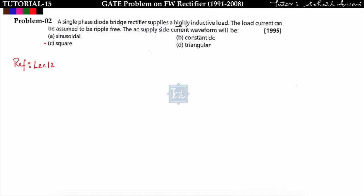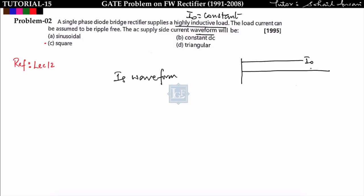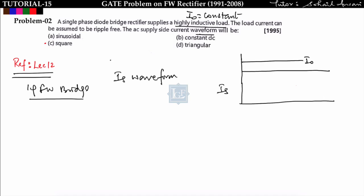Next problem: a single phase diode bridge with a highly inductive load — meaning I0 is constant and ripple-free. We need to find the AC supply side current waveform. With constant load current, from 0 to π the source current is positive and from π to 2π it is negative, giving a square wave (rectangular wave). The answer is option C.